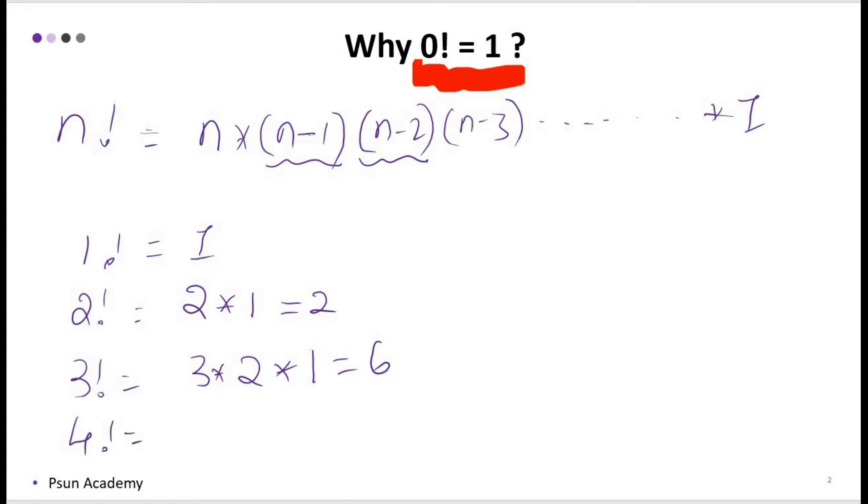Now we will see another number. What is 4 factorial? 4 into 4 minus 1 that is 3, into 4 minus 2 that is 2, into 4 minus 3 that is 1. So, 4 times 3 is 12, 12 times 2 is 24, 24 times 1 is 24.